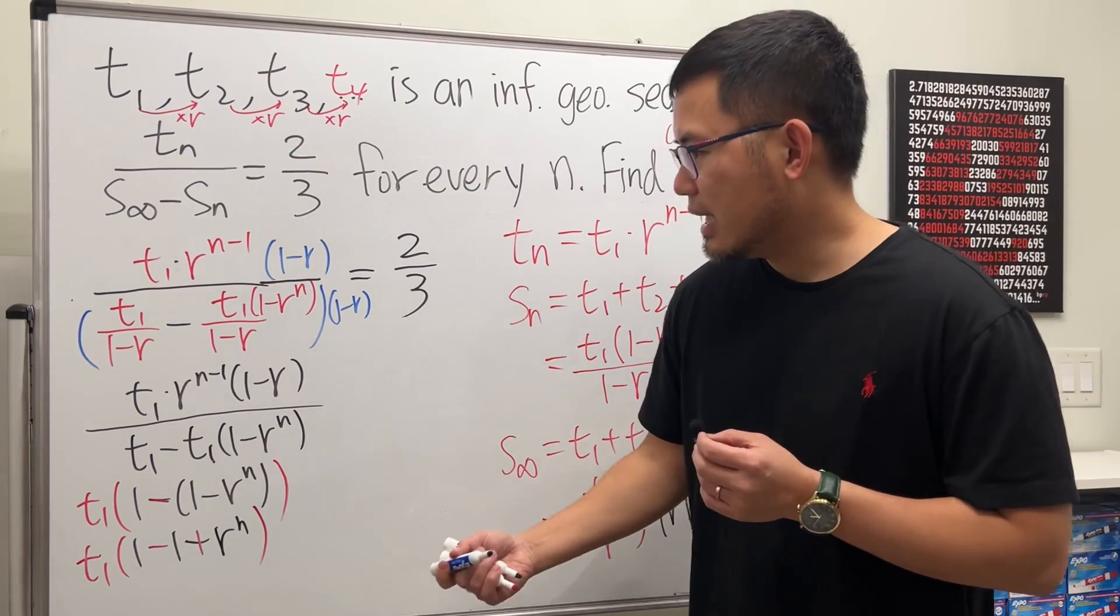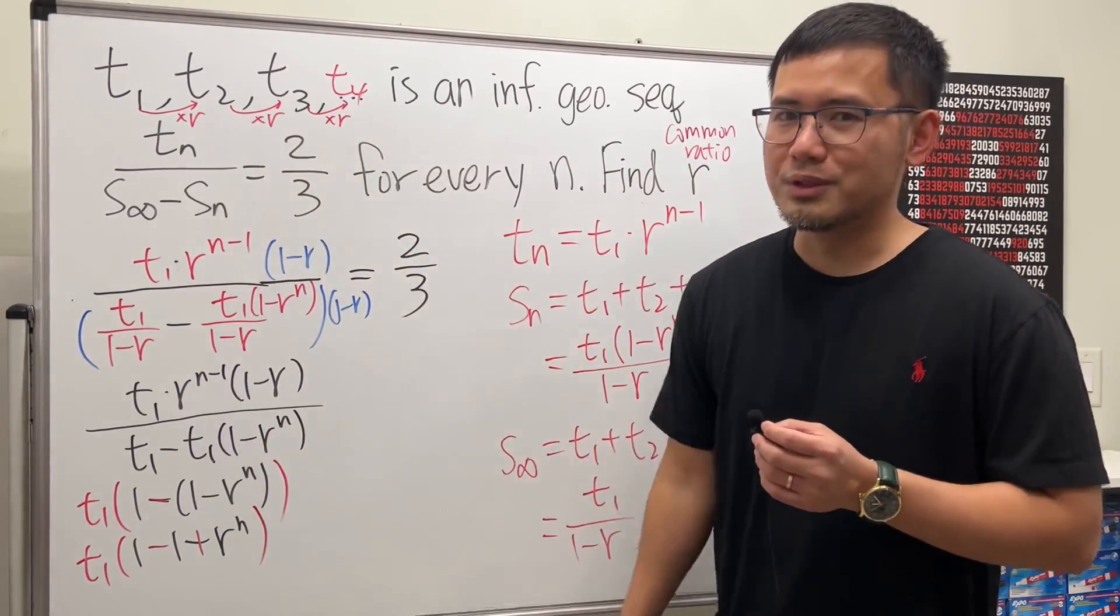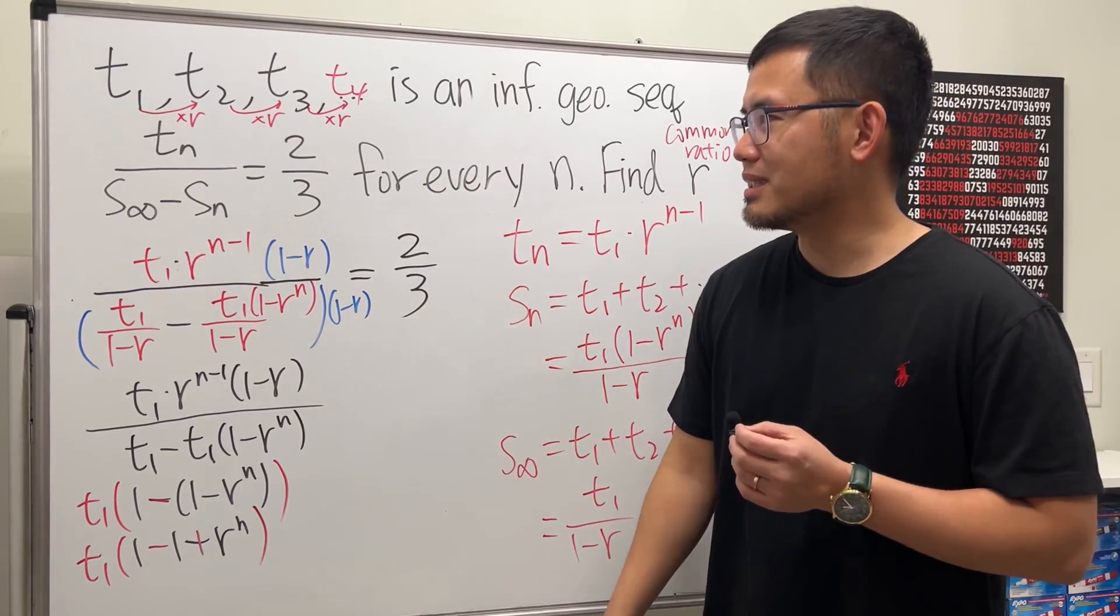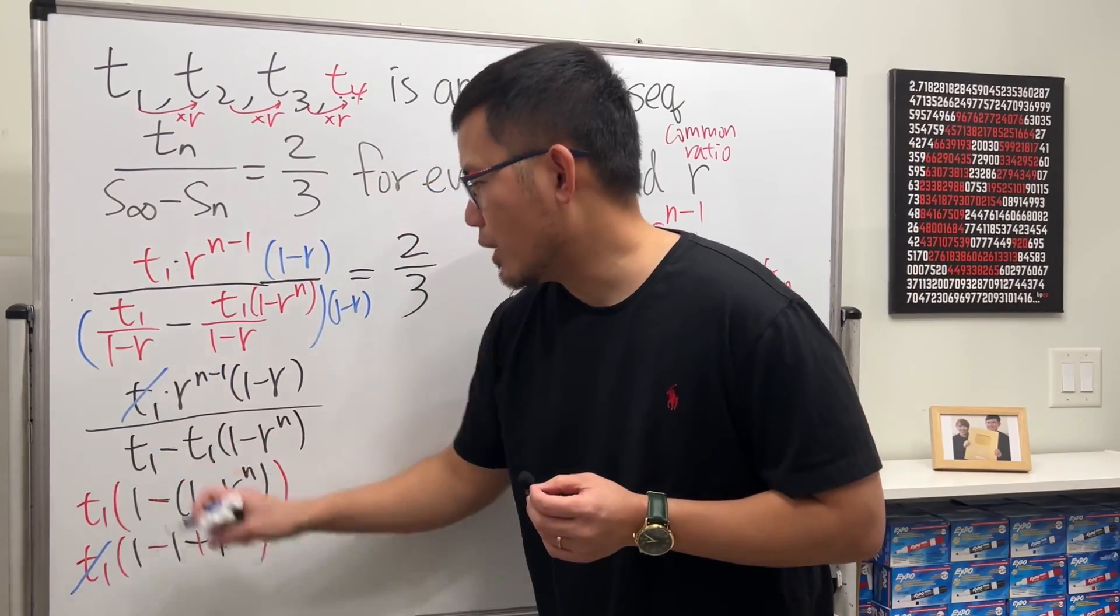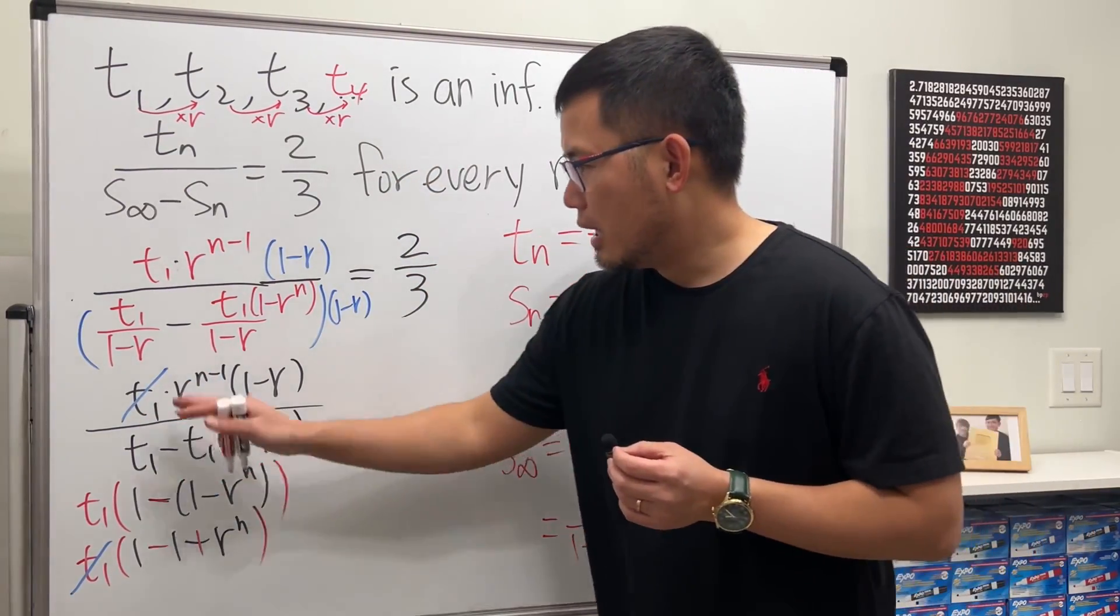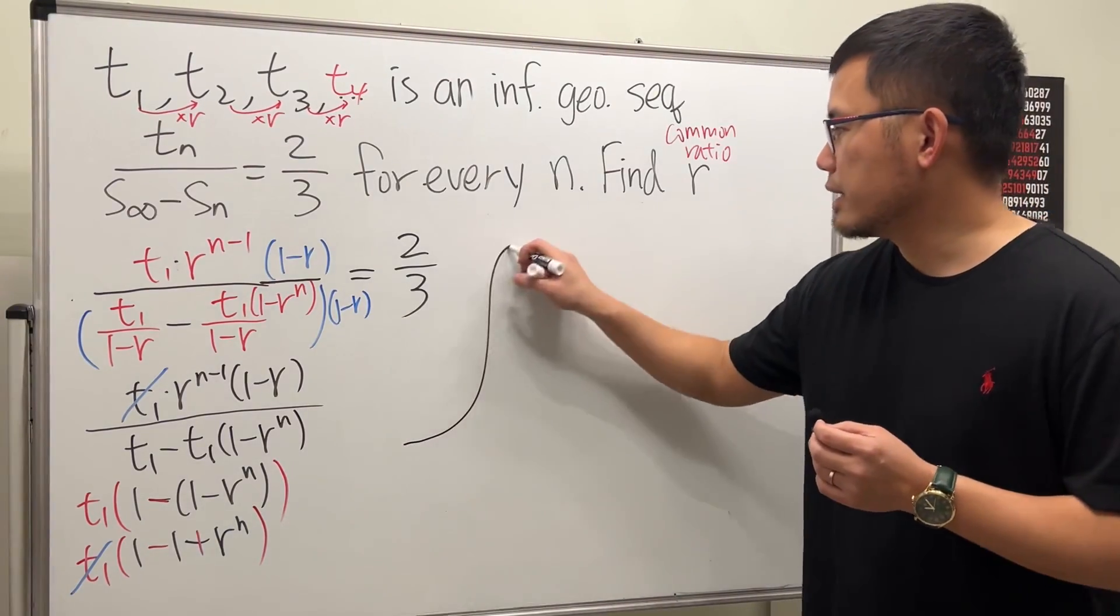So after this, we can see that, of course, t1 cannot be 0, because otherwise, all the terms are just 0. There's no way to get 2 over 3, right? So, not possible. But anyway, look, t1 and t1 cancel. So on the left-hand side, we will see the following.